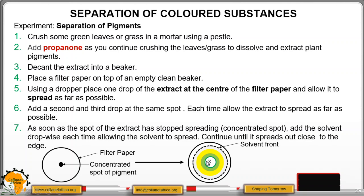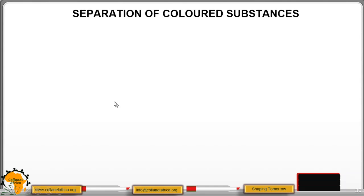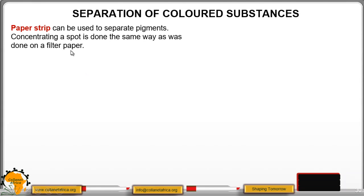The colors will be separated depending on their solubility to the moving solvent, which is propanol. Paper strip can also be used to separate pigments. Instead of using the filter paper, which is circular, we can use a paper strip.